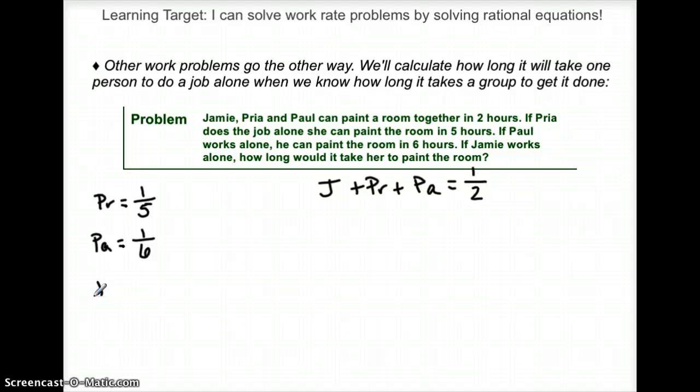And I'm trying to find Jamie's individual rate. How long will it take her to paint 1 room? So 1 over T for Jamie. So then these rates, plug them into this combined formula we've got started.